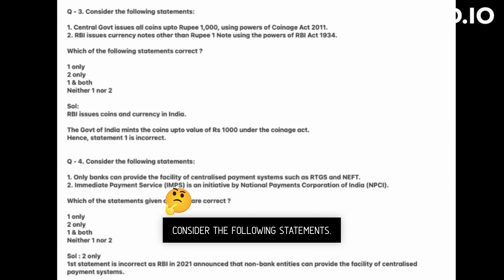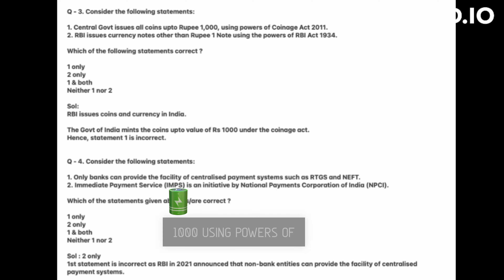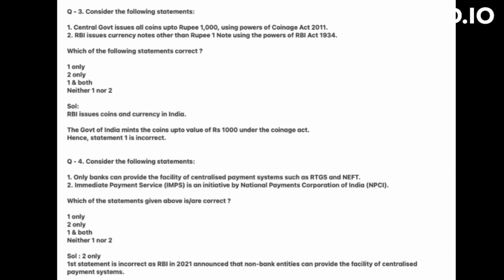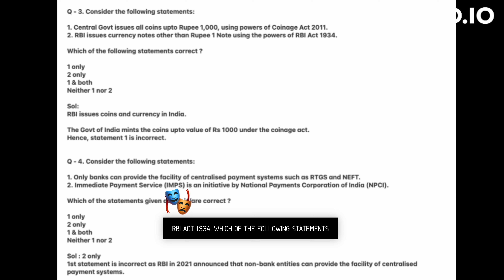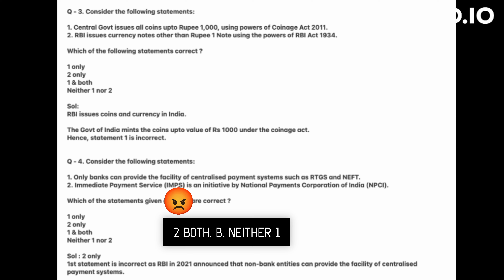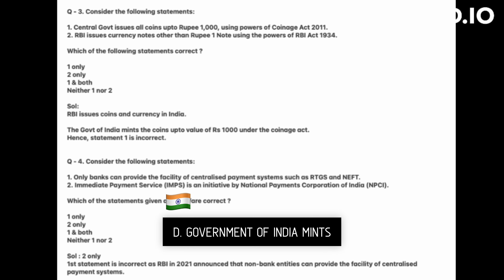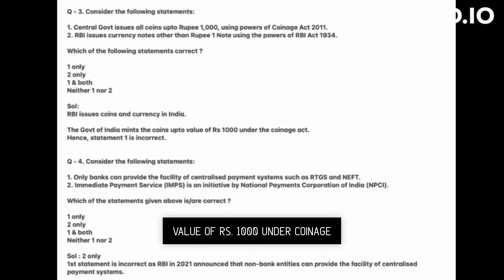Consider the following statements: One, the central government issues all coins up to rupee 1,000 using the powers of the Coinage Act 2011. Two, RBI issues currency notes other than the rupee one note using the powers of the RBI Act 1934. The government of India mints coins up to the value of rupees 1,000 under the Coinage Act; hence statement one is correct. Statement two is also correct.